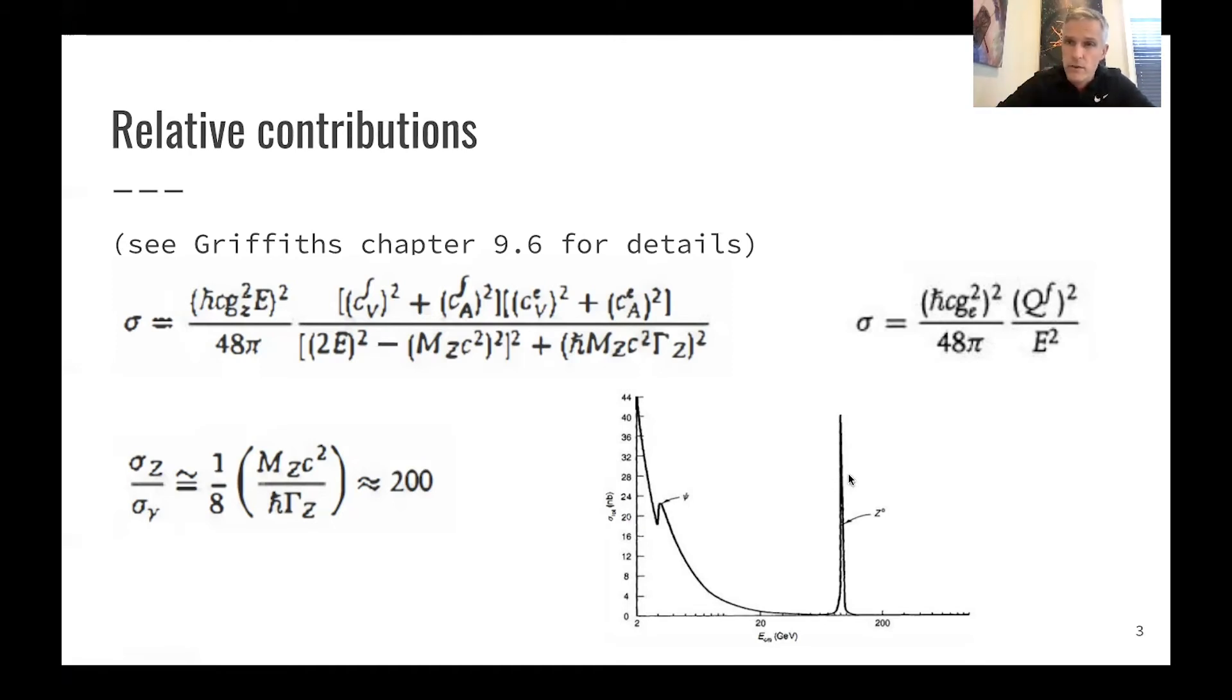And then you can, with precision, look at what is the rate into muon and antimuon? What is the rate into quark-antiquark? And so on. And you can study the mass, the width of the z-boson with an enormous level of precision.